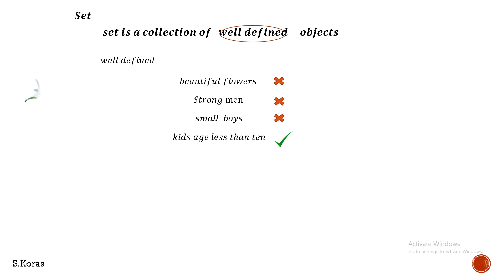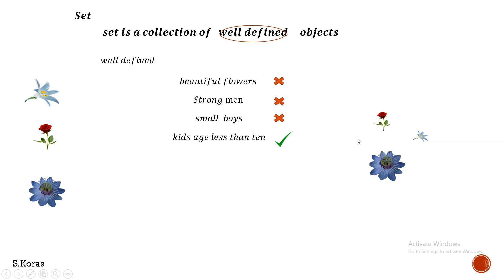Now let's look at some objects: a lily flower, a rose flower, and a passionflower. I want to collect these three well-defined objects and bring them into a set — first the lily, then the rose, then the passionflower. Now all three objects are inside a set, and we will give this set a name.